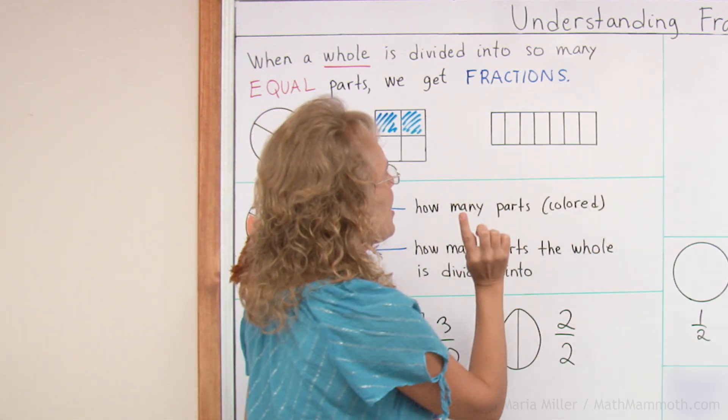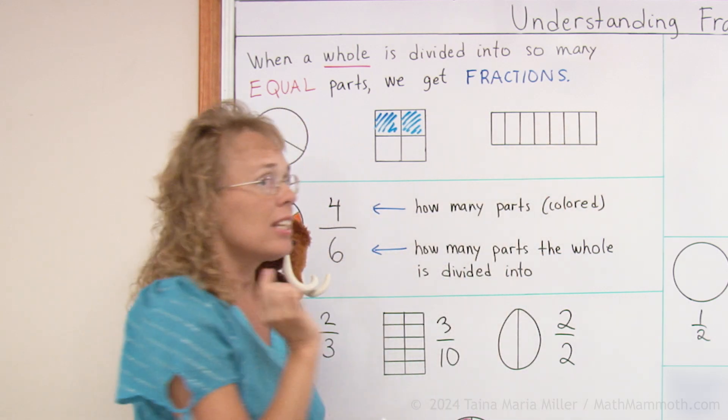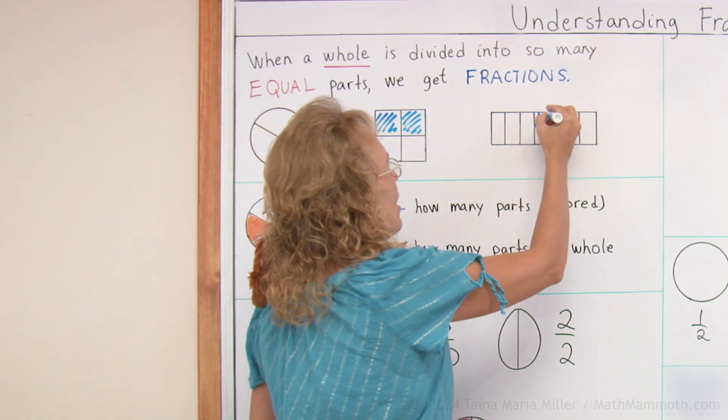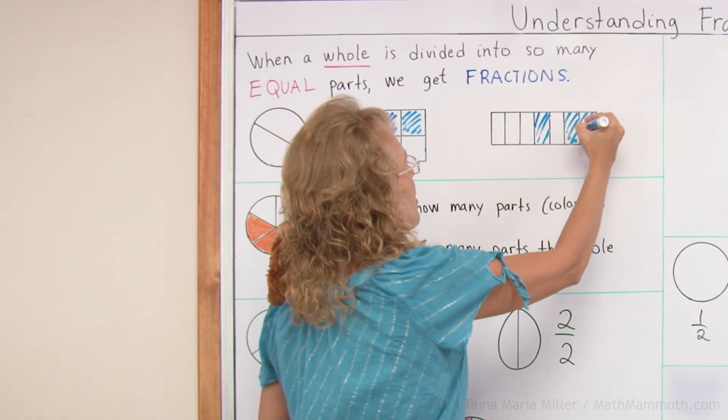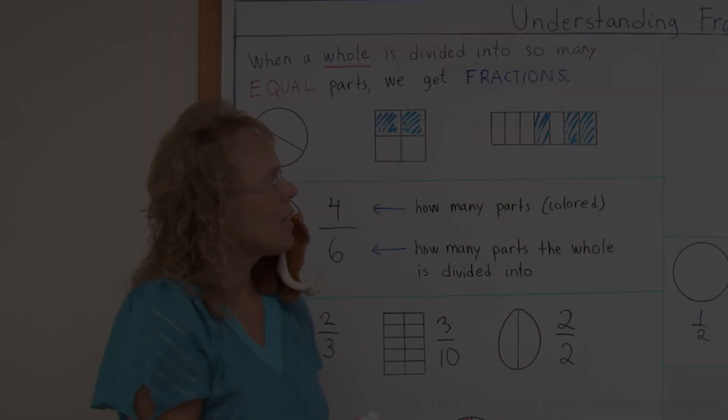Or this rectangle, it is divided into one, two, three, four, five, six, seven equal parts. So each part is one seventh. And maybe I would take three of them. And then I have three sevenths.